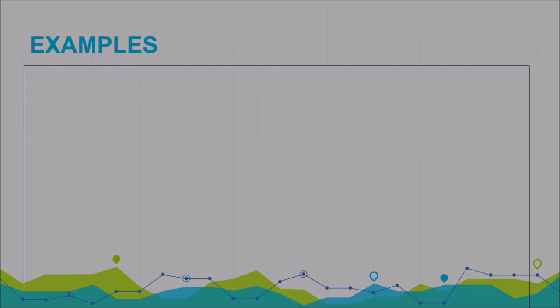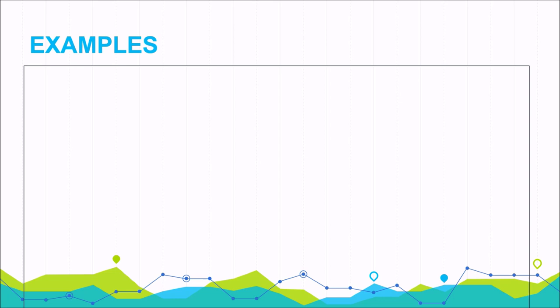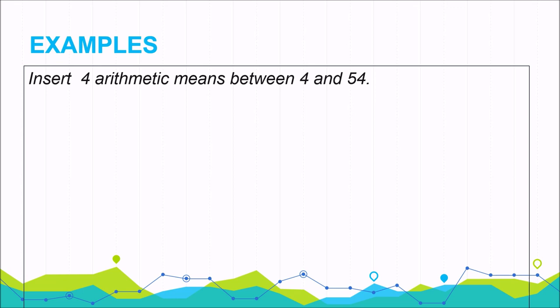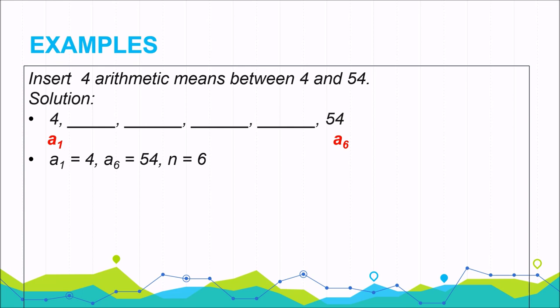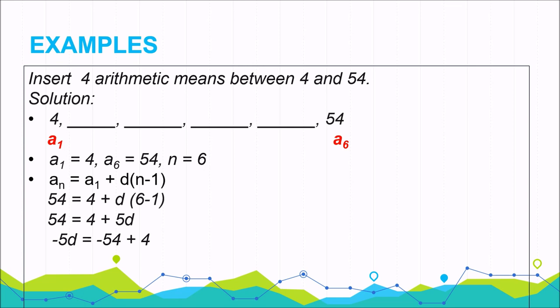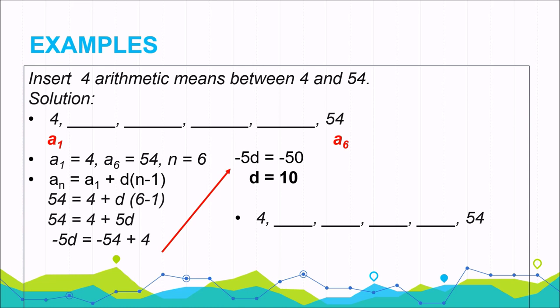Example: insert 4 arithmetic means between 4 and 54. First, make 4 blank spaces between 4 and 54. Identify a sub 1 equals 4, a sub 6 equals 54, and n equals 6. Substituting into the nth term formula and solving, the common difference is 10. So 4 plus 10 is 14, 14 plus 10 is 24, 24 plus 10 is 34, 34 plus 10 is 44, and to check, 44 plus 10 is 54. Therefore, the four arithmetic means are 14, 24, 34, and 44.